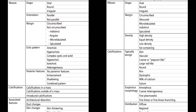Typically benign calcification patterns include: dermal calcifications, vascular calcifications, popcorn-like calcifications traditionally associated with fibroadenomas, large rod-like calcifications, rounded calcifications, rim calcifications, dystrophic calcifications, milk of calcium, and suture-related calcifications.